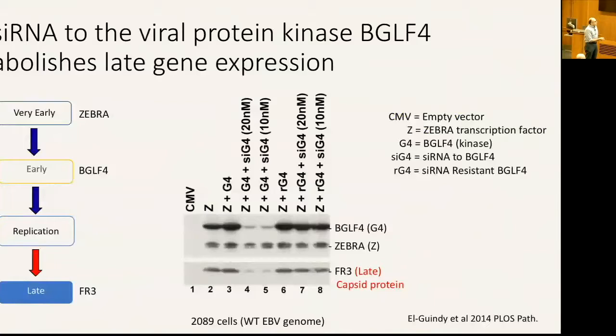If you knock down BGLF4 expression using siRNA, BGLF4 protein is markedly reduced, and this also results in significant reduction in the amount of late protein. This was the first indication that knocking down one protein affects late gene expression. To confirm siRNA specificity, we mutated the BGLF4 sequence on a plasmid with synonymous mutations that disrupt siRNA recognition. We could then rescue the defect by providing a resistant form of BGLF4, restoring late gene expression.